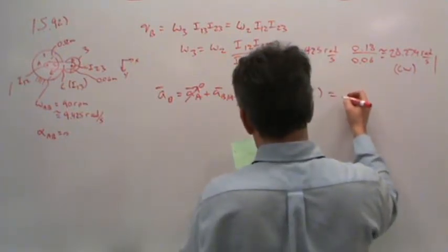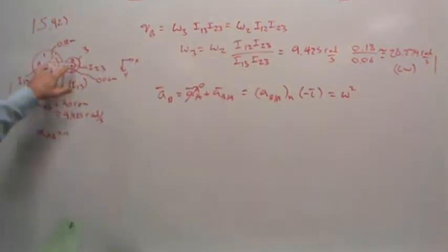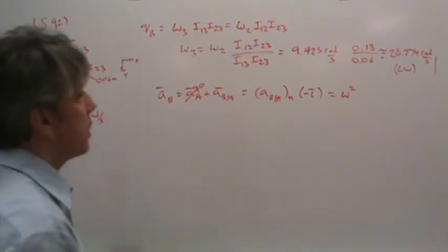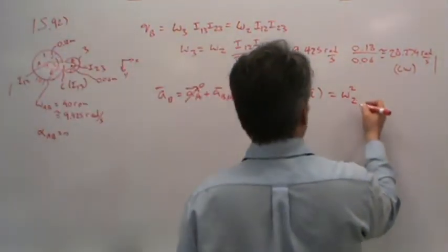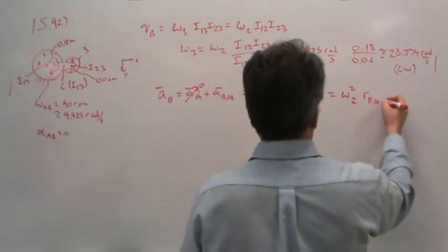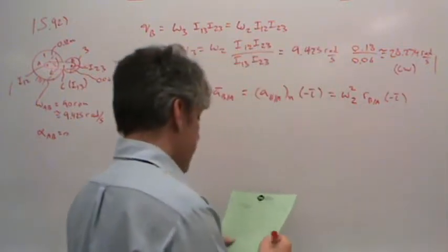the normal acceleration equation is omega squared R. So that would be omega squared. But what omega? Well, this would be the angular speed of body 2 because we're talking about the motion between A and B which has to do with body 2. So angular speed of body 2 squared multiplied by the distance between A and B, and this is in the negative i direction.